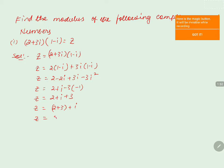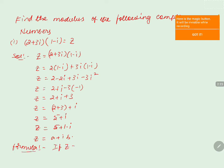So z equals 5 plus i, which can be written as 5 plus 1 times i. This complex number is in the form z equals a plus ib, where the real part a equals 5 and the imaginary part b equals 1. Now we'll apply the formula for the modulus of a complex number: if z equals a plus ib, then modulus of z equals square root of (real part)² plus (imaginary part)².